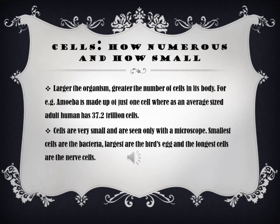Coming to few-celled animals: some very small plants and animals are made up of relatively few cells — just a few hundred or few thousands. Examples are volvox, which forms a colony, and spirogyra, which is a filamentous alga. The multi-celled animals, like human beings — an average adult human constitutes about 37.2 trillion cells in the whole body.